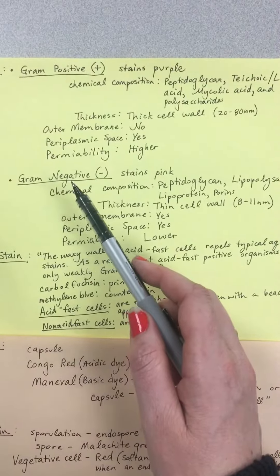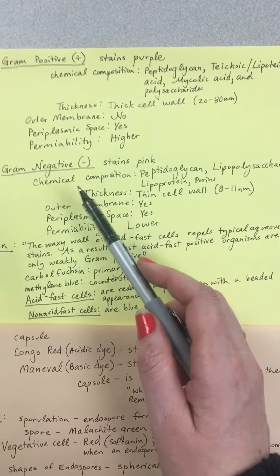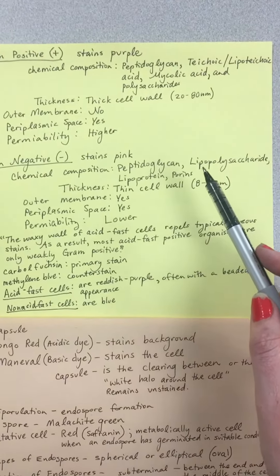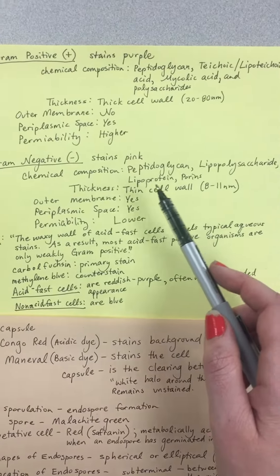Meanwhile, your gram-negative microorganisms will stain pink. The chemical composition of your gram-negative organisms is peptidoglycan, lipopolysaccharide, lipoprotein, and porins in their cell wall.